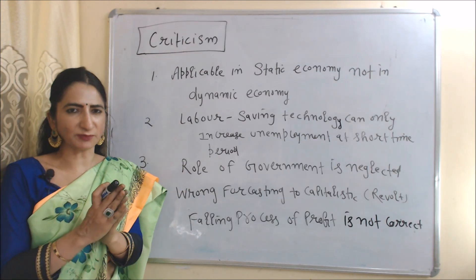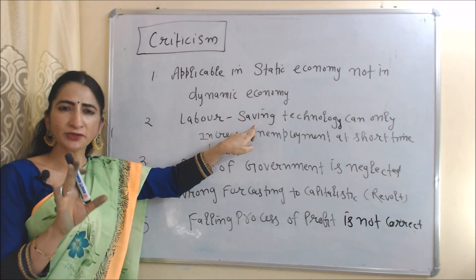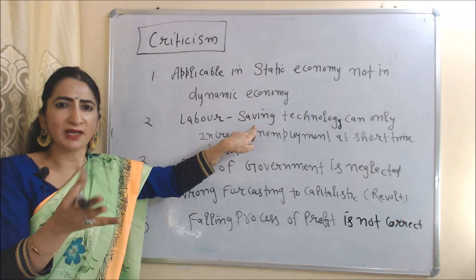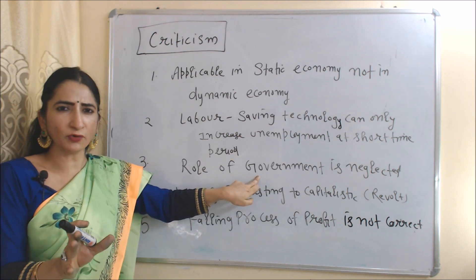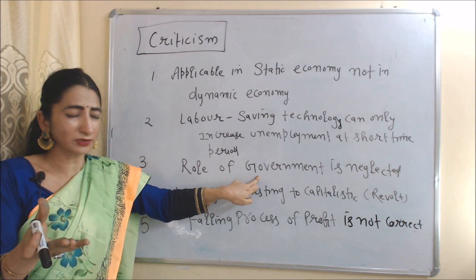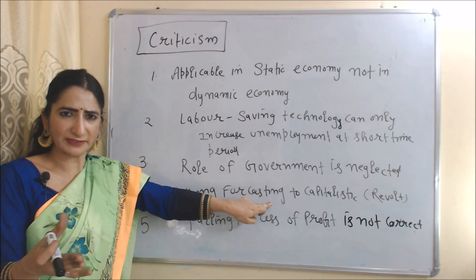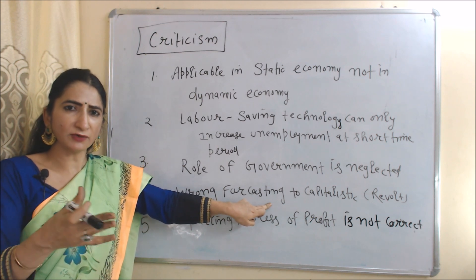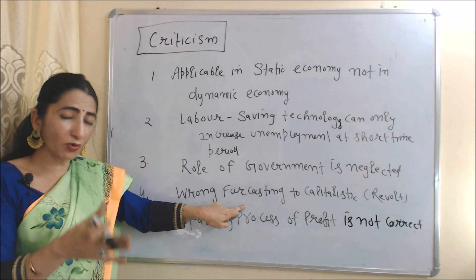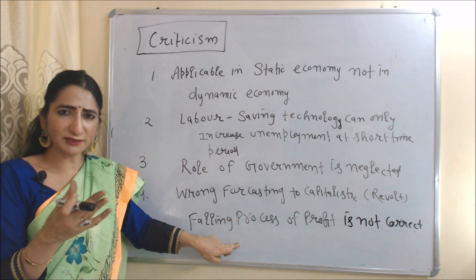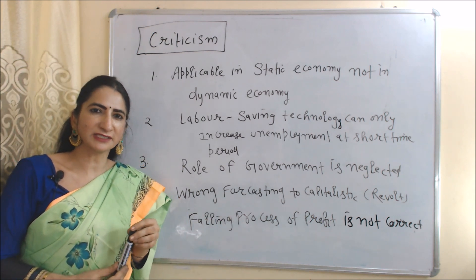Now we will see the criticism of this theory. This theory is only applicable in a static economy, not in a dynamic economy. According to this theory, labor-saving technology increases unemployment, but this is possible only in the short run, not the long run. This theory neglects the role of government, which plays a very important role in economic growth. The theory also does wrong forecasting: it predicted that the reserve army of labor would revolt and capitalism would end, but this is wrong. The process of falling profit defined by this theory is also not correct.